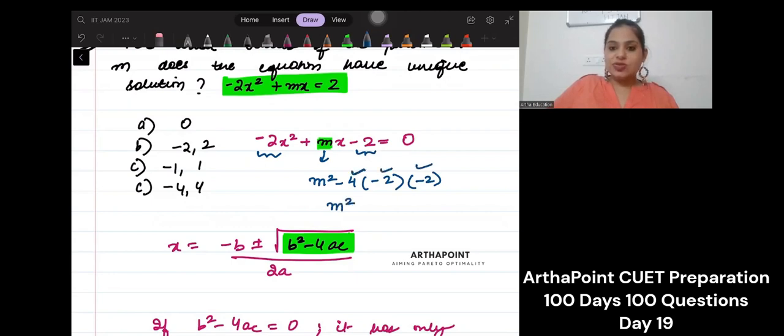So you will get m squared, 4 into 2, 8 into 2, 16, minus 16 equals 0. So your m squared will be 16. So your m will be plus minus 4.